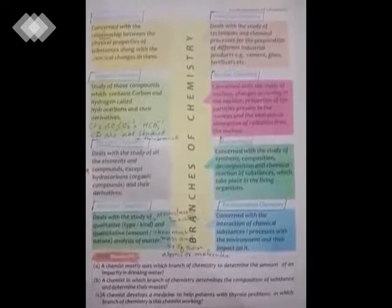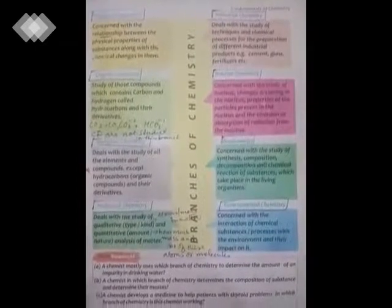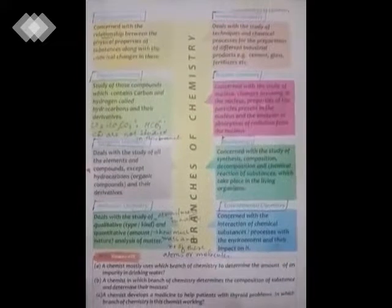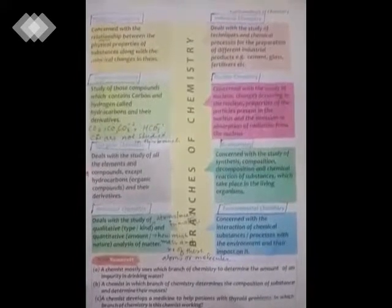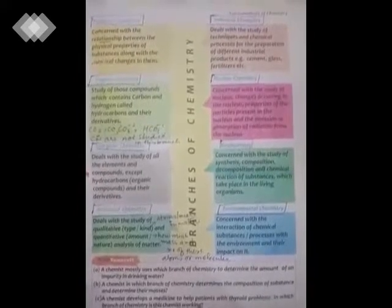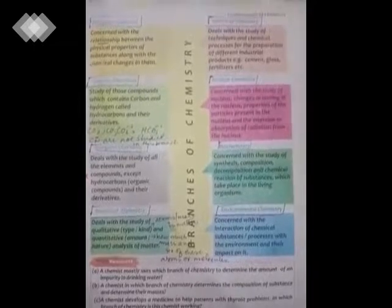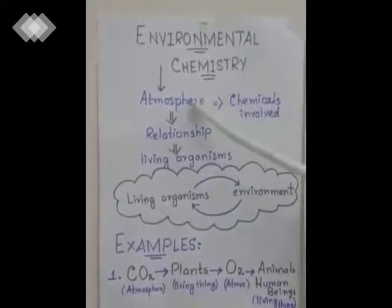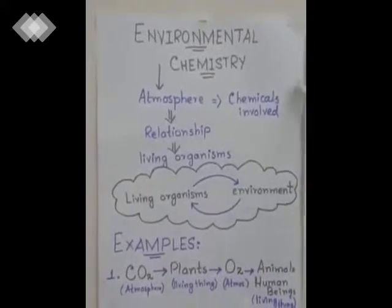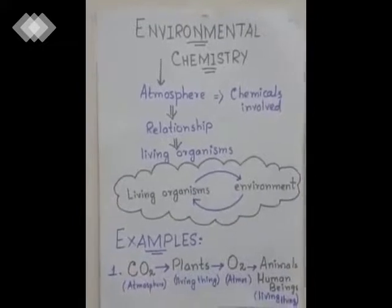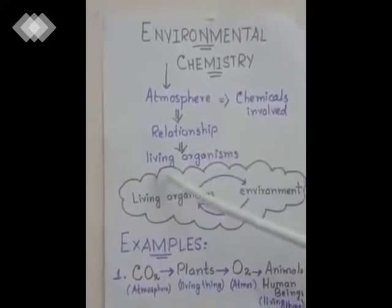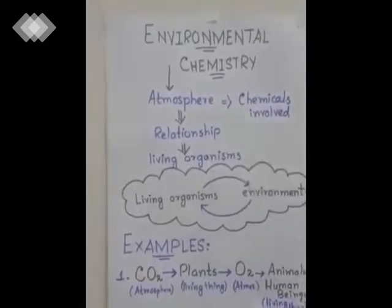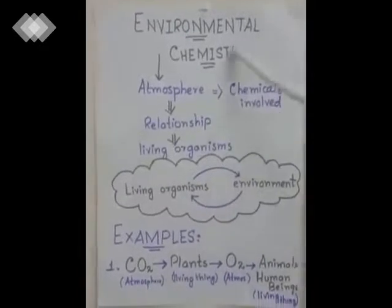Now we discuss the last branch: environmental chemistry. Its definition is that it is concerned with the interaction of chemical substances or processes with the environment and their impact on it. The word 'environmental' refers to the atmosphere. The chemicals involved in the atmosphere and the relationship of the atmosphere with living organisms are all studied in this branch.